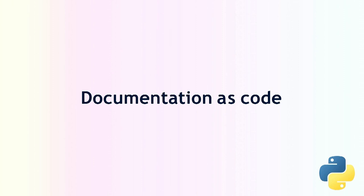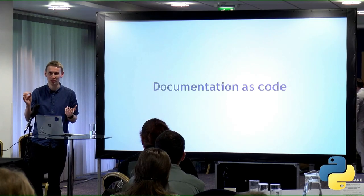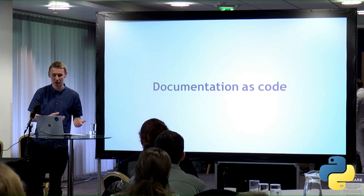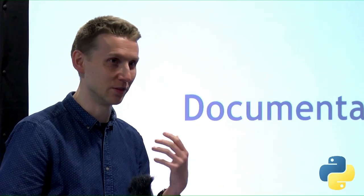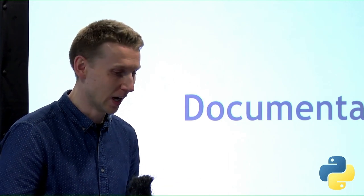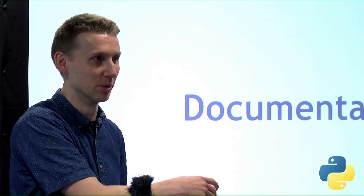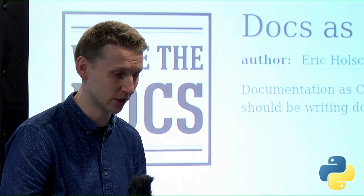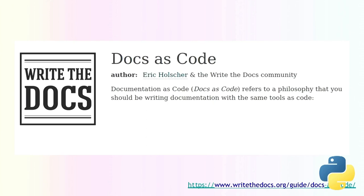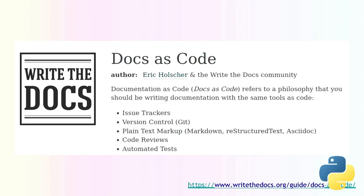In the last few minutes, I'll cover the idea of documentation as code. This was a new term to me but not a new concept. Documentation as code is the idea that you should write documentation with the same tools as code: using an issue tracker, version control, text markup, code reviews, and automated testing — not just using the same editor, but the whole workflow. You don't want to end up using a word processor like Microsoft Word for your documentation.